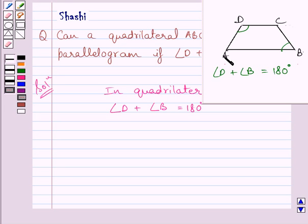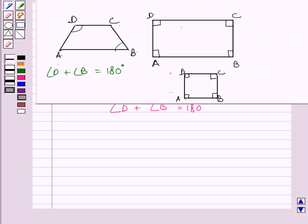Quadrilateral ABCD can be a parallelogram only if angle B is equal to angle D, and both equal 90 degrees. If both of these angles are right angles, then ABCD is a parallelogram. If we take angle D and angle B equal to 90 degrees, then ABCD is either a rectangle or a square.